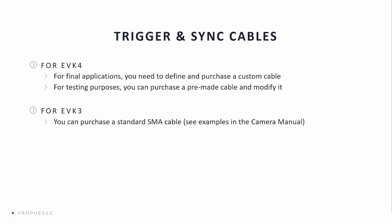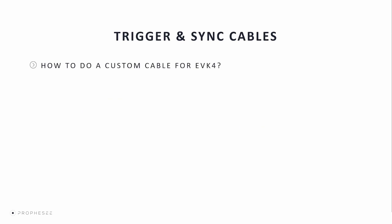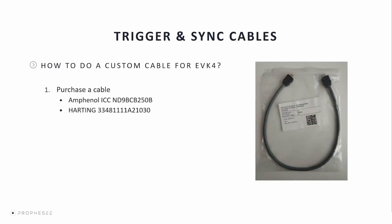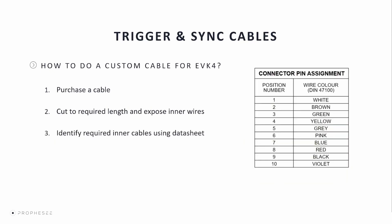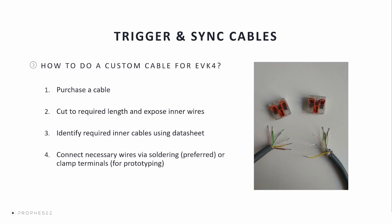Note that if you use the EVK-3, there is no need to make a custom cable because you can directly purchase a standard SMA cable. To fabricate a custom cable for the EVK-4, you'll need to purchase one of the cables listed on screen. It is important that a cable with all 10 inner wires is selected, as cables using these connectors do exist with only a subset of inner wires connected. Cut the cable and split the inner wires, identify the inner cables using the datasheet, and connect the necessary wires via soldering — the preferred way — or simply clamping terminals for prototyping. Finally, you have a custom cable for the EVK-4.